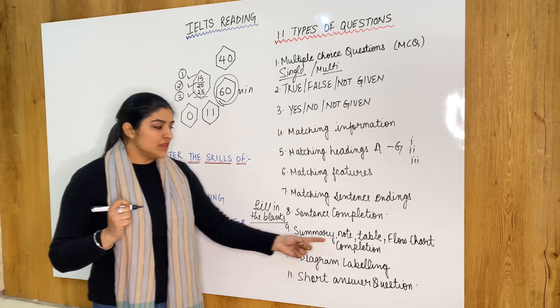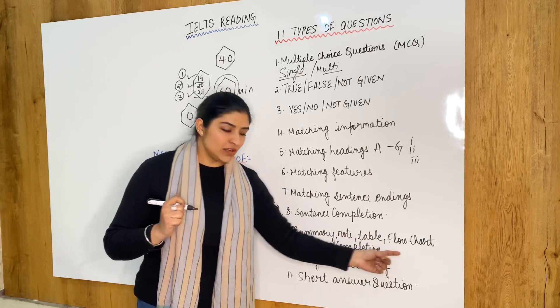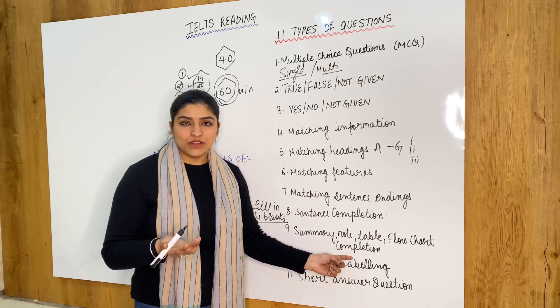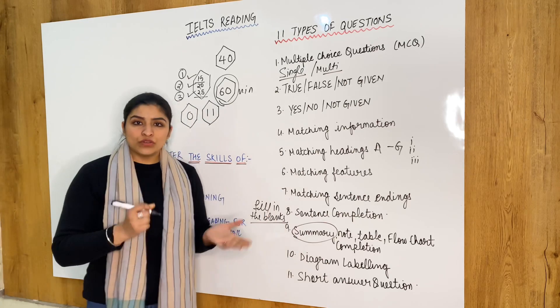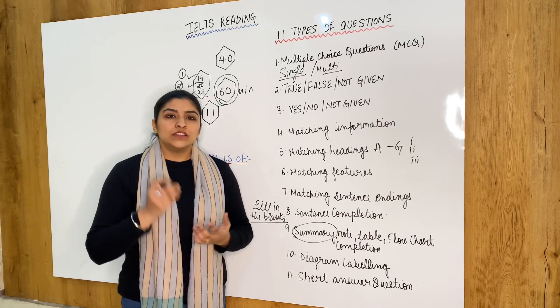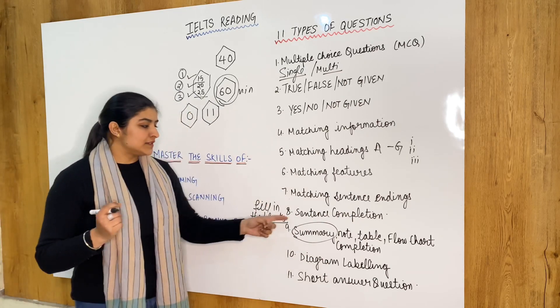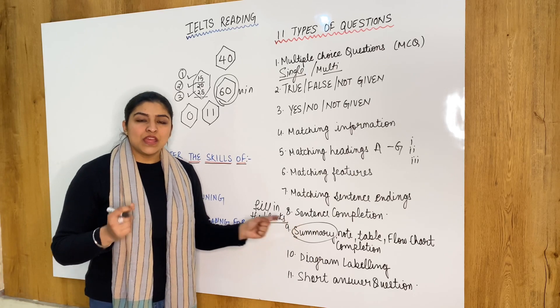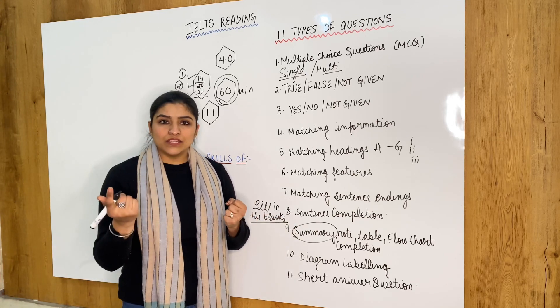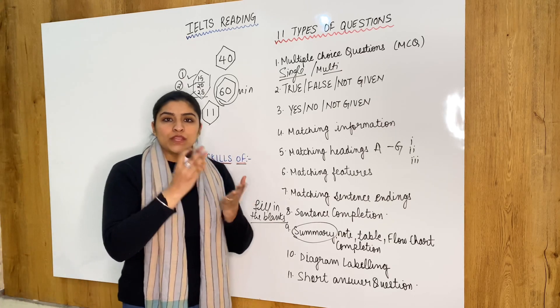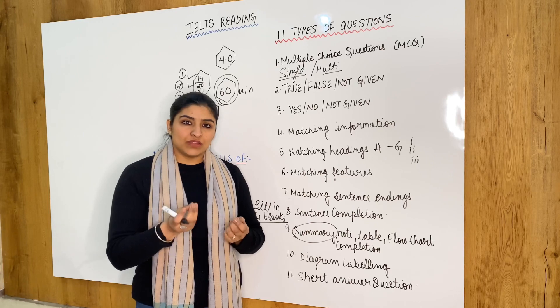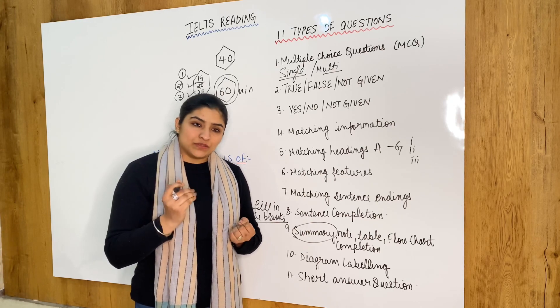The next is summary, note, table, flow chart and whatever completion you get. So the summary completion is more or less like filling the blanks. The only difference is that in sentence completion you get a particular question type in one line. But summary is the crux of the whole or 2 or 3 paragraphs. Which comes in the sequence only.